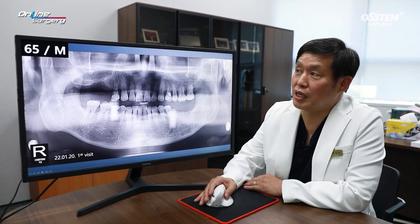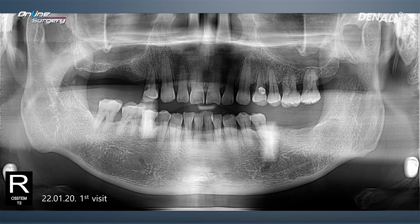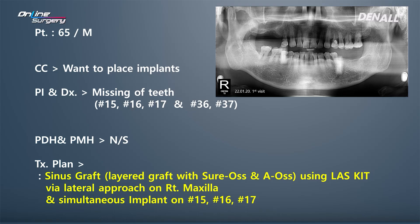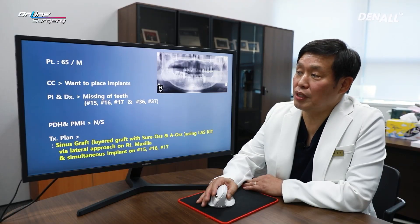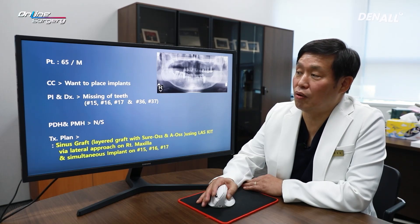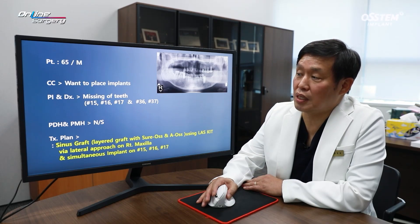Let's take an overview of the case. This is the panoramic image at the initial visit. This is a 65-year-old male patient with missing teeth in the upper right quadrant and lower left quadrant. The chief complaint was missing teeth on both sides. The patient wanted implant treatment — numbers 15, 16, 17 and numbers 36 and 37 are missing. The patient wanted to receive surgery on the upper right first, then proceed with the lower left after that.